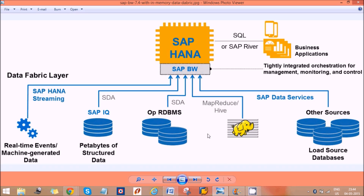BW doesn't have many reporting options, whereas HANA multi-dimensional models support many reporting tools. Apart from that, HANA modeling also has calculation views, where we can create extraordinary functionalities by combining multiple analytical views.